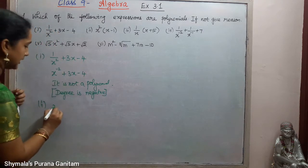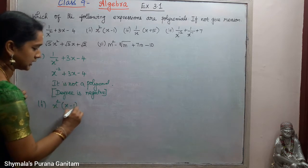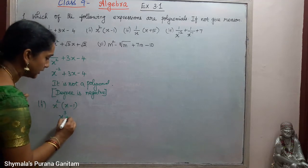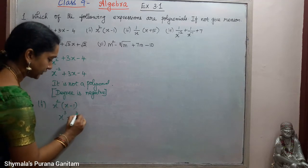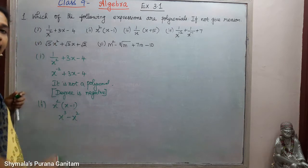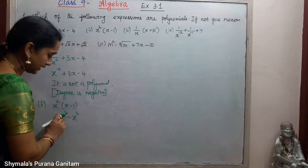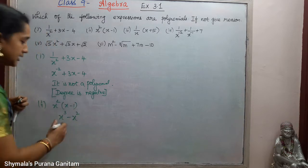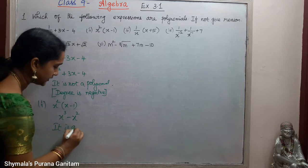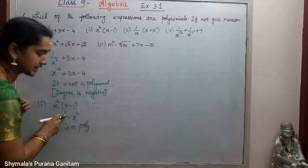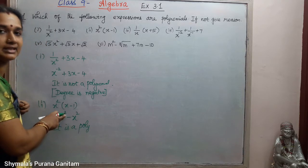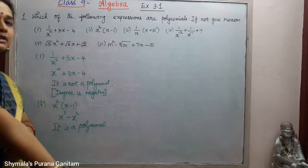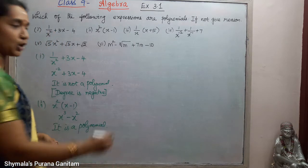Second one is x²(x − 1). We simplify: x² × x = x³, and x² × 1 = x². So we get x³ − x². Here all the powers are positive, so it is a polynomial. Since the highest degree is 3, it is a cubic polynomial.